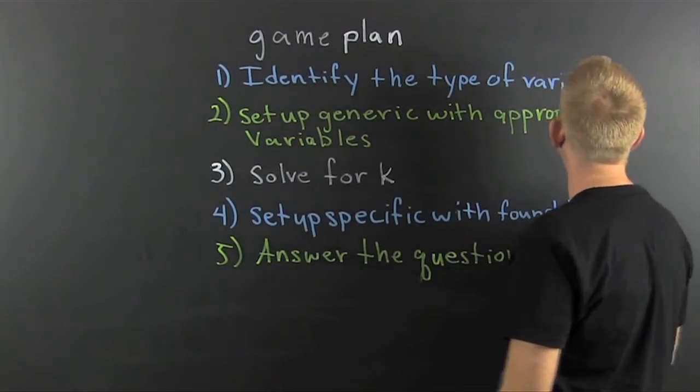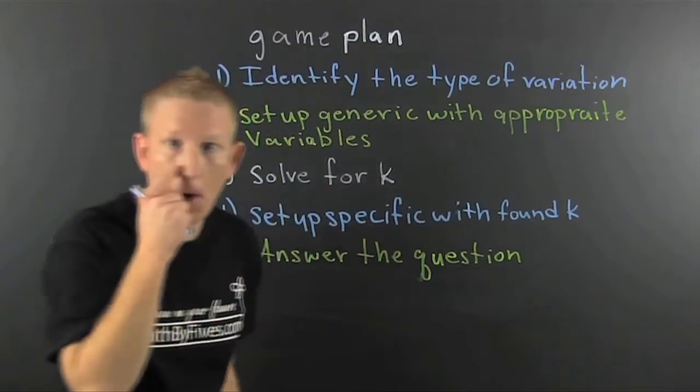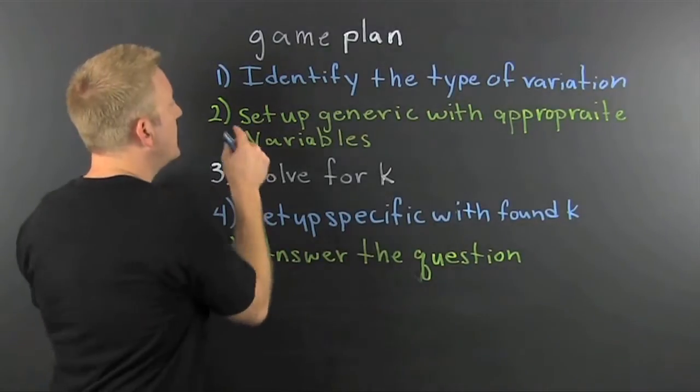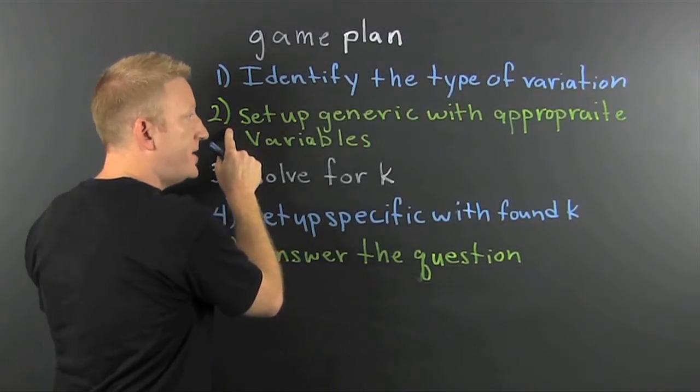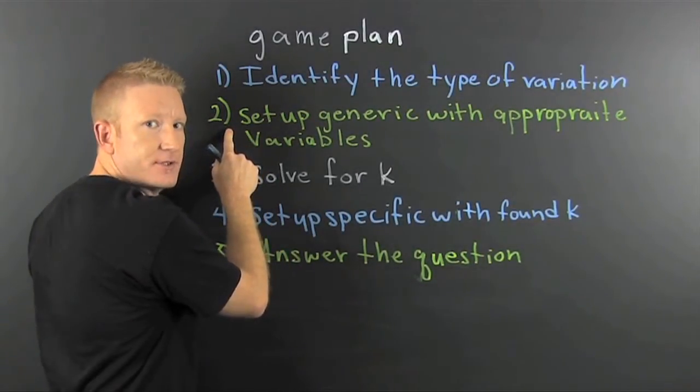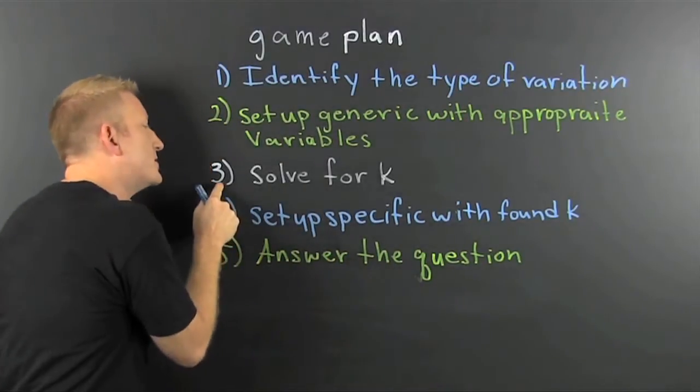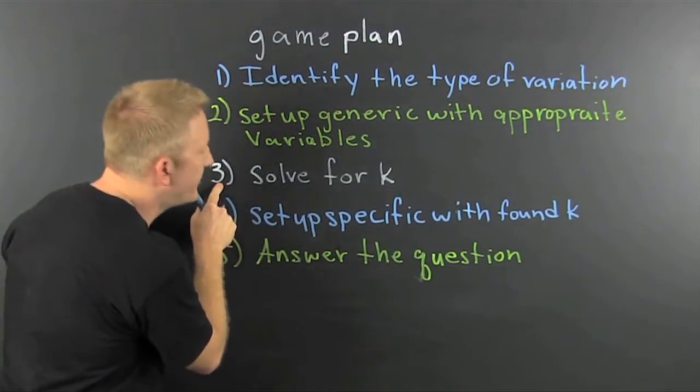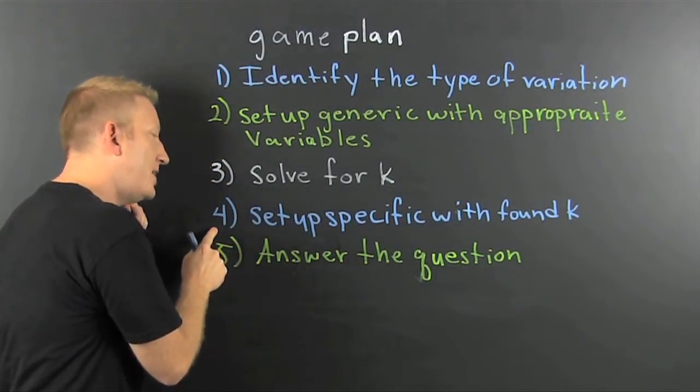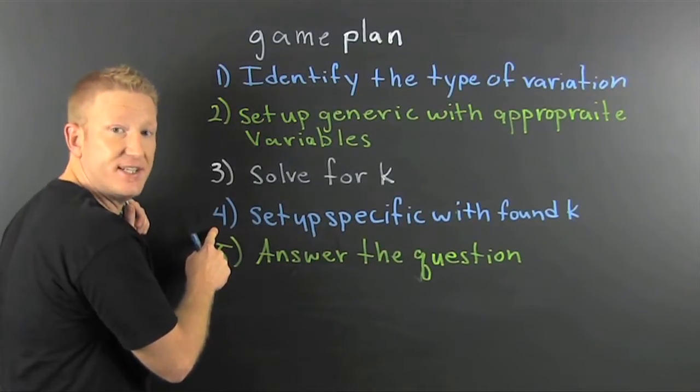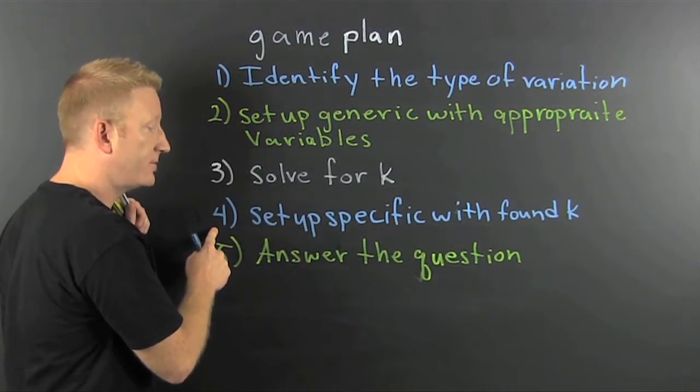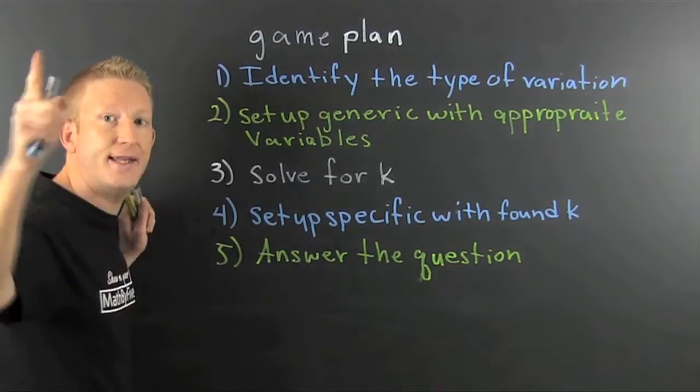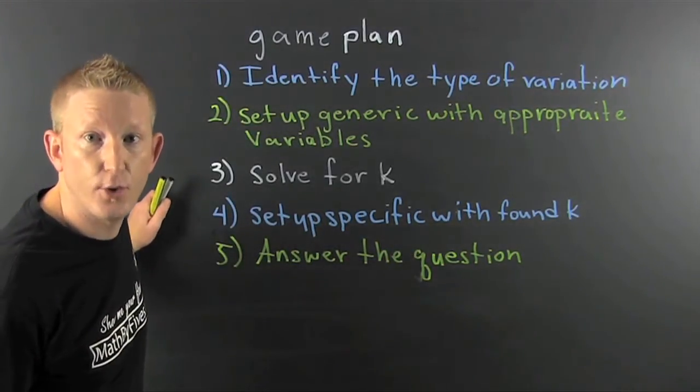First, we're going to identify the type of variation. Oh boy! Then, we're going to set up the generic with appropriate variables. Then, we're going to solve for K. Then, we're going to set up the specific with our found K. Okay! And then finally, you answer the question.